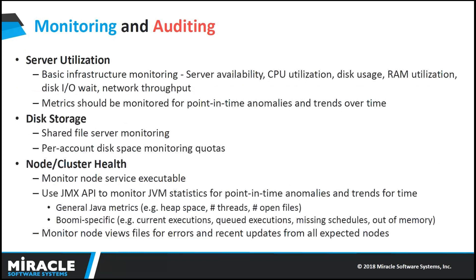For monitoring and auditing: we can see the execution of different processes and how each shape is behaving in an execution process. We can check CPU utilization, disk space, disk usage, and RAM utilization. We can also manage the Atom — check properties, check extension properties, and schedule processes using Atom management. We also have a tool called JMX where we can configure the Atom and monitor it from that particular tool.